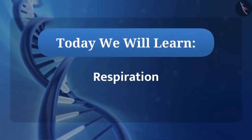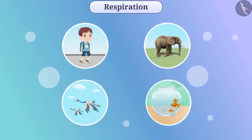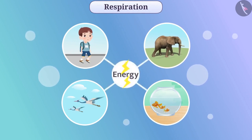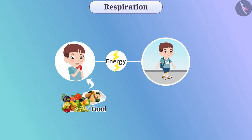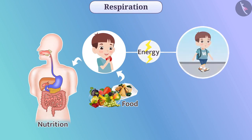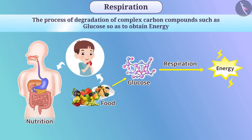Today we will learn about respiration. In the previous video, we learned that living beings need energy to do different tasks. This energy is obtained from food, and living beings obtain their food through the process of nutrition. For the production of energy from food, the process of respiration is important. The process of degradation of complex carbon compounds, such as glucose, so as to obtain energy, is called respiration.